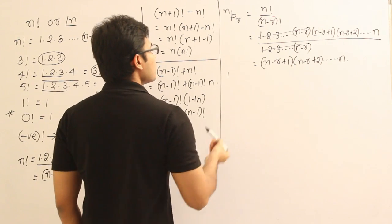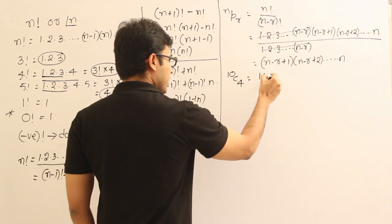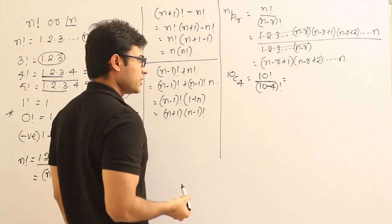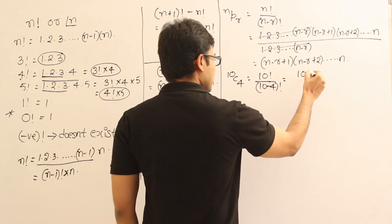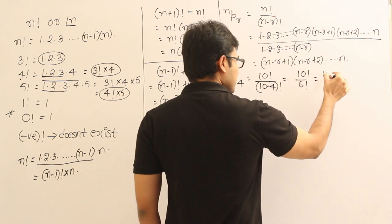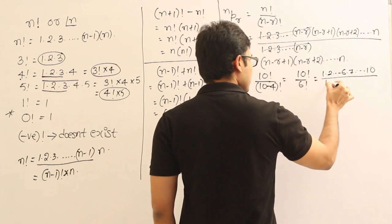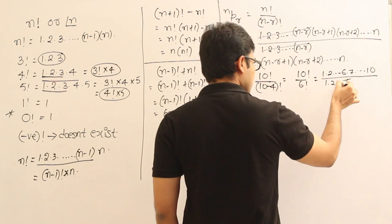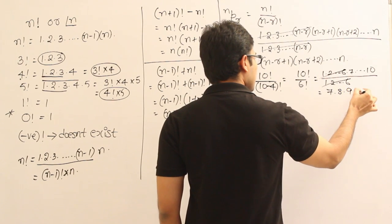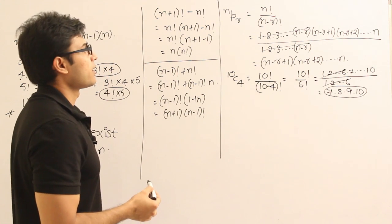Let's see an example. To find 10P4, the formula gives 10 factorial divided by (10−4) factorial, which is 10 factorial divided by 6 factorial. Writing it out, terms 1 through 6 cancel, leaving 7 × 8 × 9 × 10. So that is the answer.